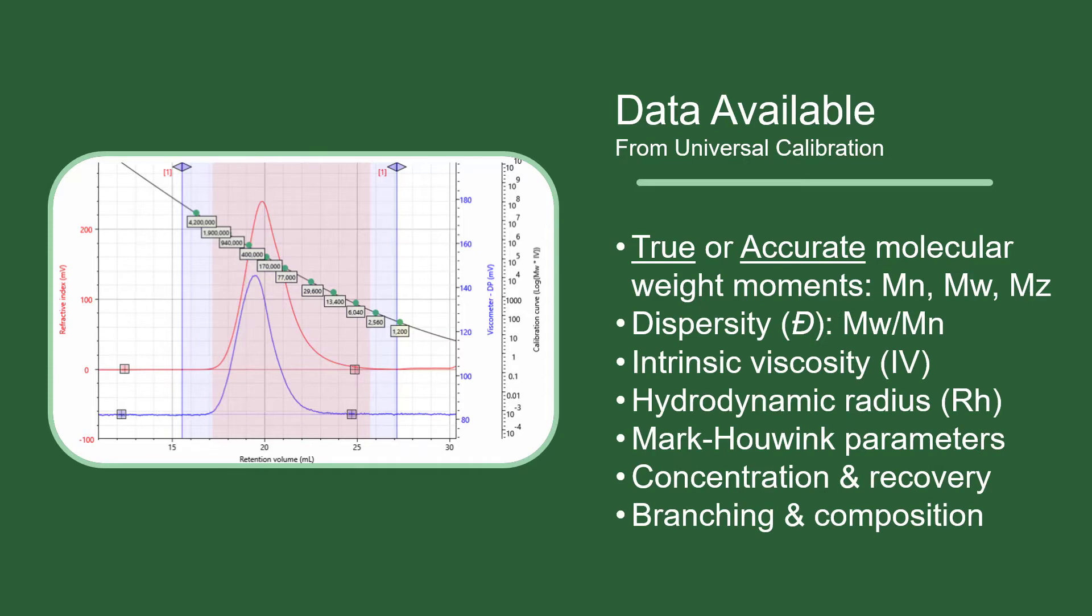Intrinsic viscosity, hydrodynamic radius, and branching information can be obtained because of the presence of the viscometer, but the quality of the data still relies on your standards.